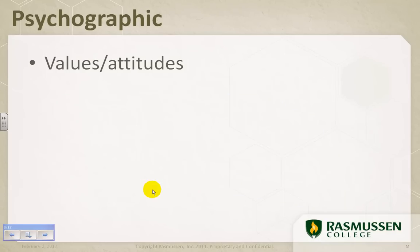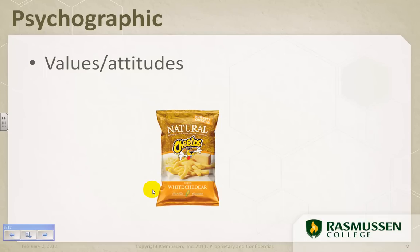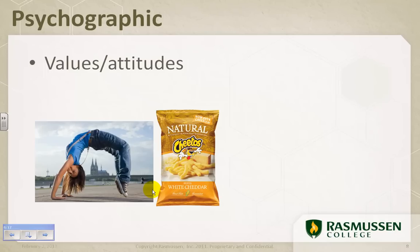But what about values and attitudes? It's another way to look at the psychographic profile. Who might buy this product? Natural Cheetos, white cheddar, you still want a snack, but you want it to be healthy, you want it to be better for your body. You might visualize this person. She is active, still wants the flavor, but has a very different attitude about her snacking than the gentleman in the previous slide.